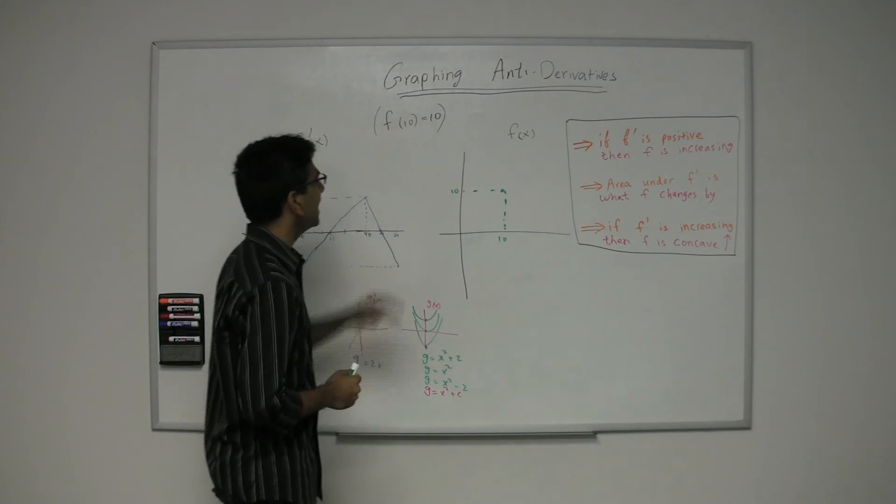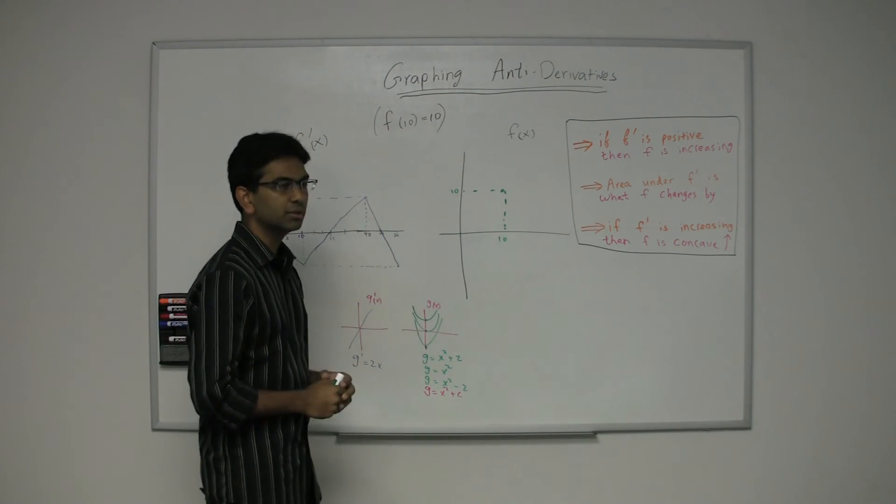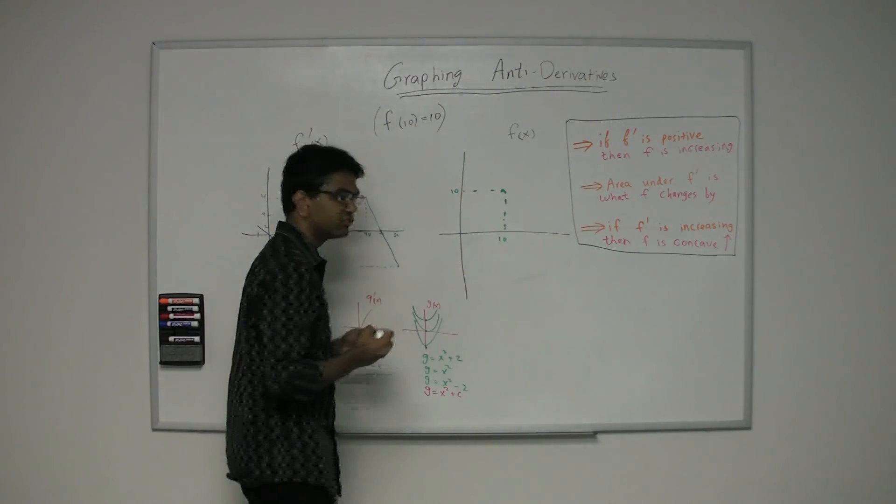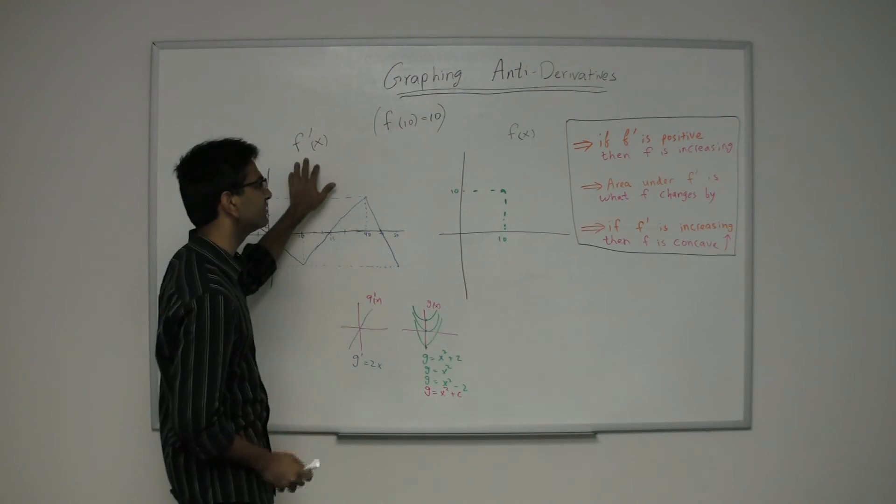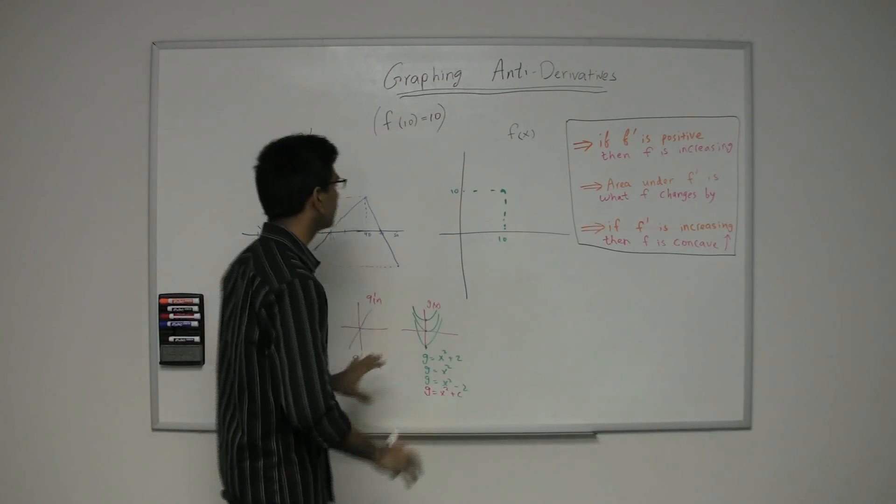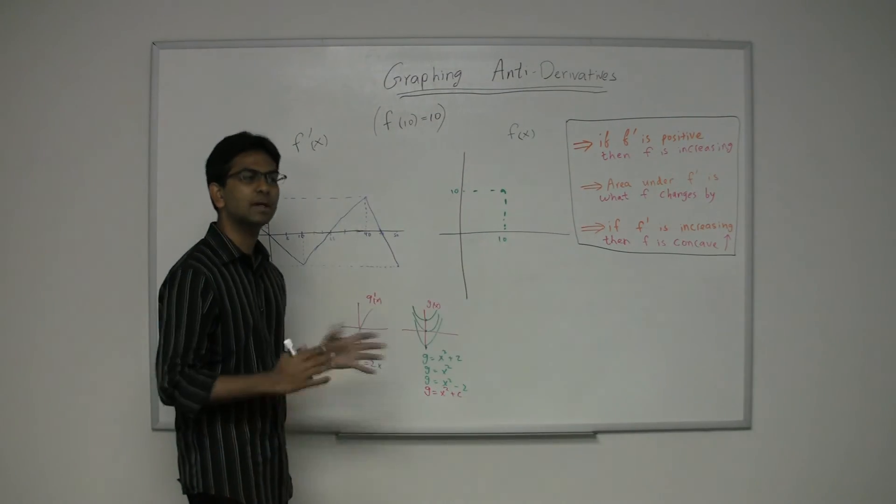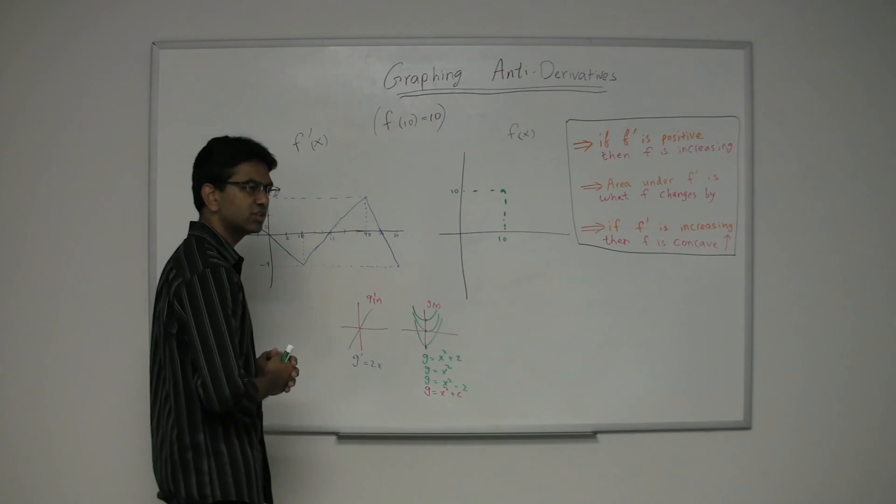So as you can see, f of 10 equals 10. So what you were thinking of should be on this graph, 10, 10. It's really easy to confuse f prime of 10 versus f of 10, so just draw those two graphs out separately, and then you'll avoid that confusion.